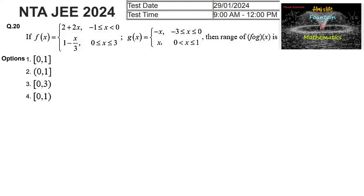If f of x is equal to 2 plus 2x for minus 1 less than or equal to x less than 0, and 1 minus x upon 3 for 0 less than or equal to x less than or equal to 3. And g of x is given as negative x when minus 3 less than or equal to x less than or equal to 0, and positive x when x lies between 0 and 1, where 0 is excluded.